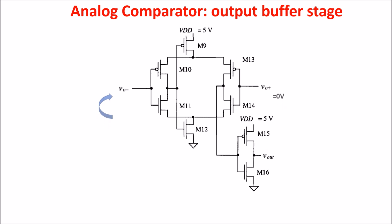In the case of VO minus greater than VO plus, we get zero on the output as we wanted.